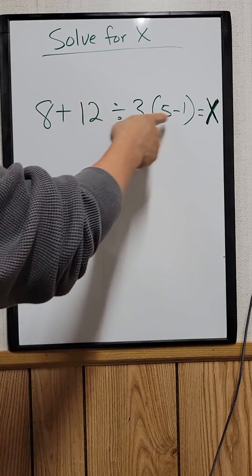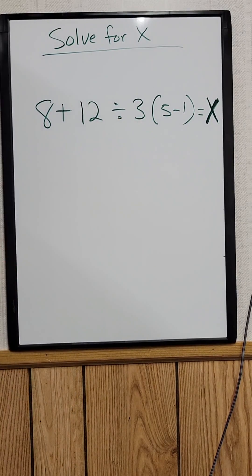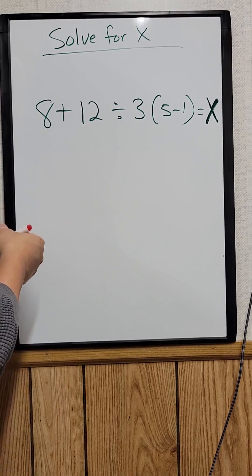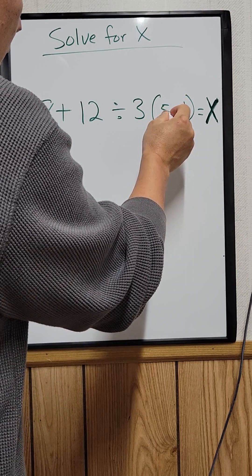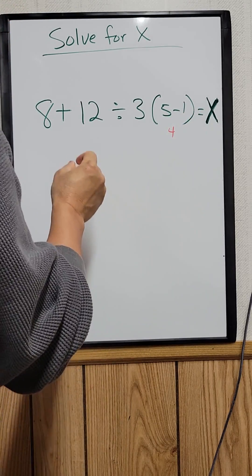Let's solve for x for this equation right here. The first thing you need to do is solve anything that's in the bracket. So this one, 5 minus 1 would be 4.